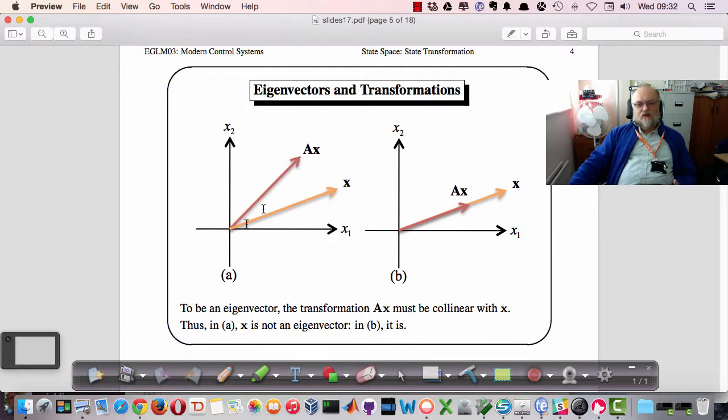But anyway, the definition of x is a vector and the definition of A times x is also a vector. For the special case where we have this eigenvalue-eigenvector relationship, the Ax and x are what are called collinear. So they have actually the same direction, not necessarily the same magnitude, but certainly the same direction in the x-space. And so eigenvectors are special vectors which have this property. When they're multiplied by A matrix, they produce a vector which is in the same direction as the original vector.